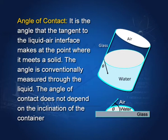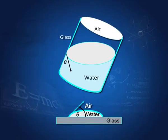Here again, there is water and air, and this angle — if I draw a tangent to the surface — is the angle of contact. It is measured through the liquid. The angle of contact does not depend on whether this beaker is straight or tilted; it does not matter.